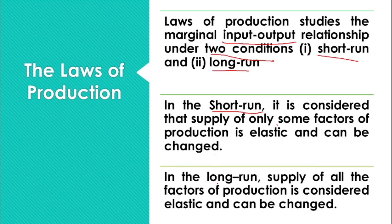In the case of the long run period, it is considered that the supply of all of the factors of production is elastic and is changeable. So in the long run, you can change the whole scale of production, you can change the technology, you can change the labour — you can change everything. In the long run, the factors of production can be changed.